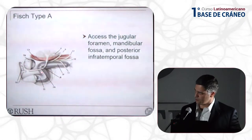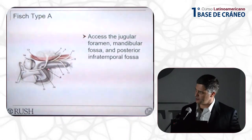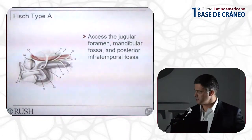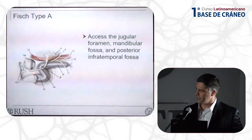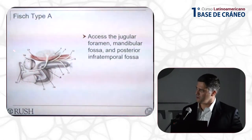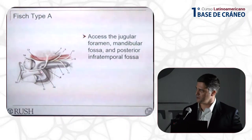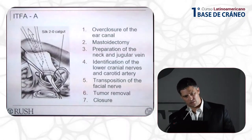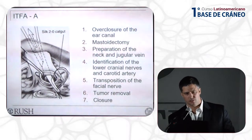When we use this approach currently, we're using more of a partial rerouting of the vertical segment of the facial nerve rather than the classic full rerouting. For jugular foramen tumors, I've been partially rerouting the vertical segment of the facial nerve, which gives enough access to the jugular foramen to remove tumors in that area. The general steps of this approach are: overclosure of the external auditory canal, mastoidectomy, preparation of the neck, identification of lower cranial nerves in the neck, transposition of the facial nerve if chosen, tumor removal, and closure.